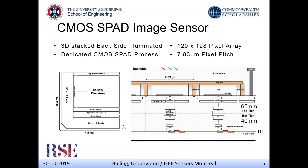The CMOS SPAD image sensor used is a 3D-stacked, backside-illuminated CMOS sensor, designed in a dedicated CMOS process even though it is wafer-to-wafer bonded. The actual SPAD is in the 65nm top tier and the integrated circuitry is underneath in a 40nm CMOS process. The reason we went for a backside-illuminated device is because we will be exposing it to radiation — to optimize radiation hardness and make sure the device doesn't break. It is an array image sensor, 120 by 128 pixels, with a 7.83 micrometer pixel pitch, and at the time of use this was state-of-the-art.